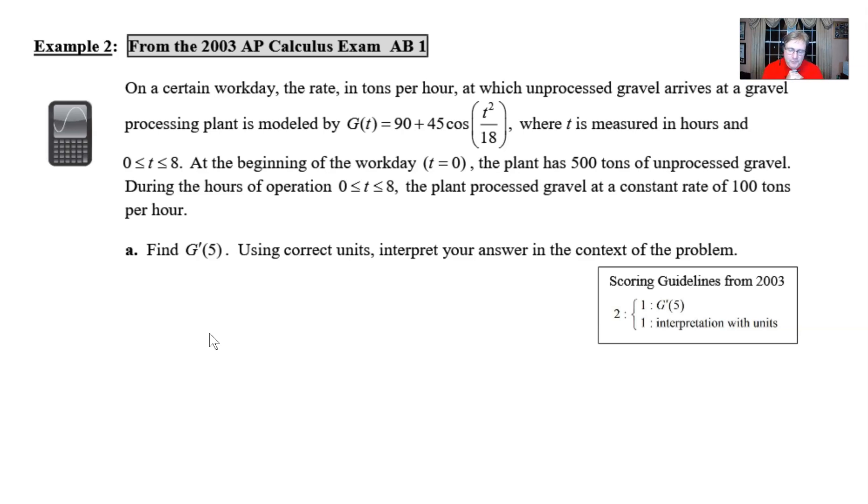At the beginning of the workday at time 0, the plant has 500 tons of unprocessed gravel. During the hours of operation between times 0 and 8, the plant processed gravel at a constant rate of 100 tons per hour.